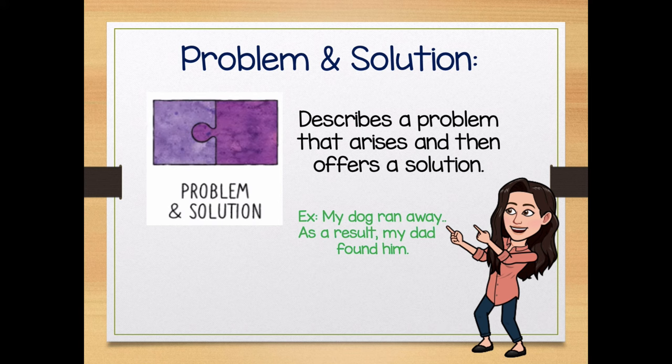Our last type of text structure is problem and solution. We are very familiar with problem and solution type of text, mostly in nonfiction and fictional stories — there's a plot, a series of events that happen, and we have to identify what happened and how it was resolved. Sometimes you might hear this as conflict resolution as well. Problem and solution describes a problem that arises, but then it offers a solution.